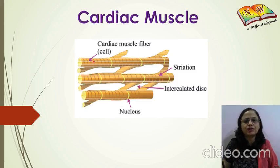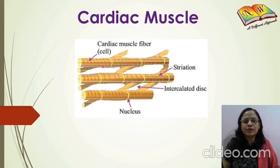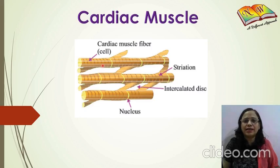Every cardiac muscle cell has one single nucleus, so the cells are uninucleate. Another specific feature of cardiac muscle is its amazing strength — it never gets tired, starts working before the birth of a person, and continues working until the person dies. This is because cardiac muscle cells have an extraordinary number of mitochondria that continuously generate energy in the form of ATP.